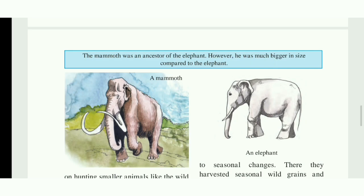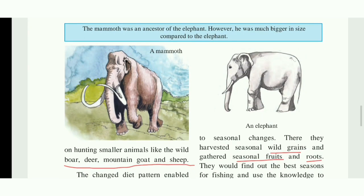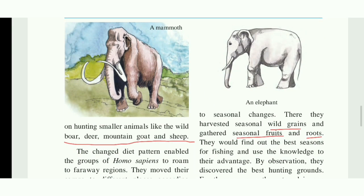You can see the picture of the mammoth. Nowadays they are extinct, and they are considered to be the ancestor of the elephant. So homo sapiens hunted small animals like wild boar, deer, mountain goat, and sheep, and they also turned to fishing. Since the diet of homo sapiens changed, this enabled them to roam to faraway regions, and they cleared jungles and set up camps, moving to different places as per seasonal changes.